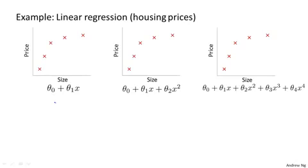Let's keep using our running example of predicting housing prices with linear regression, where we want to predict the price as a function of the size of the house. One thing we could do is fit a linear function to this data. If we do that, maybe we get that sort of straight line fit to the data. But this isn't a very good model. Looking at the data, it seems pretty clear that as the size of the house increases, the housing prices plateau or flatten out as we move to the right. We call this problem underfitting, and another term for this is that this algorithm has high bias.